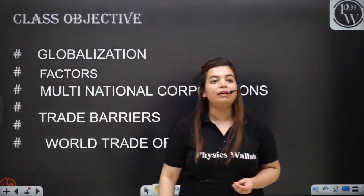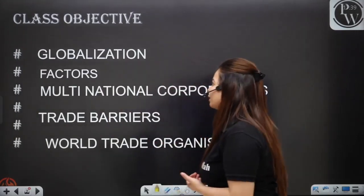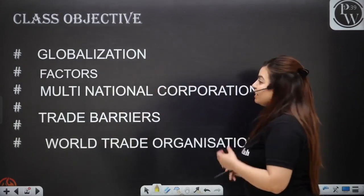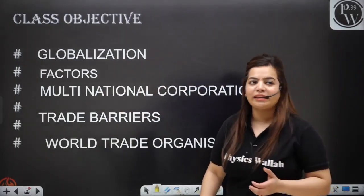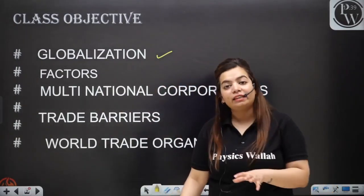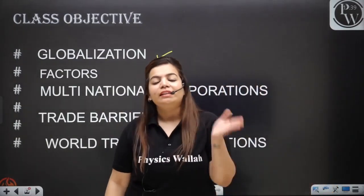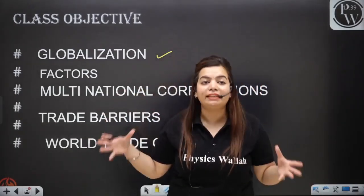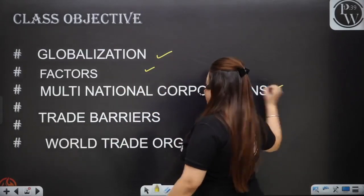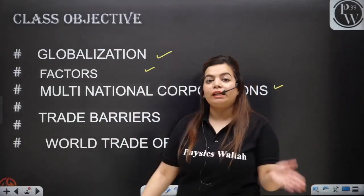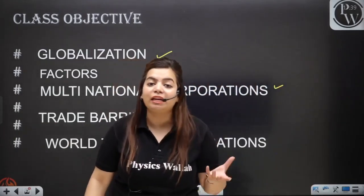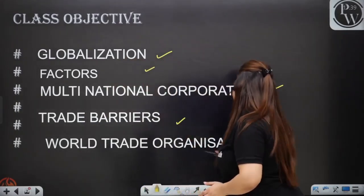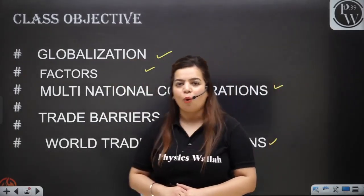Let us see what all we are completing in this chapter. We will start with what globalization means, the definition of globalization, and the factors that enable globalization. Then we will understand how countries are interconnected, how multinational corporations are built. Then we will understand what are trade barriers and the barriers given by the government, and we will understand what is the World Trade Organization.